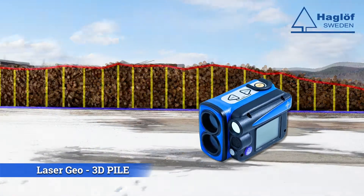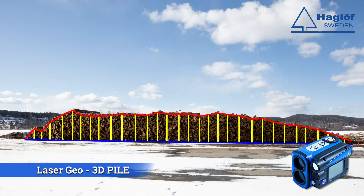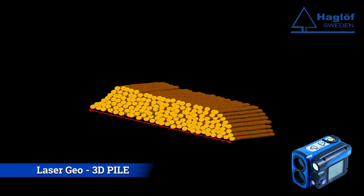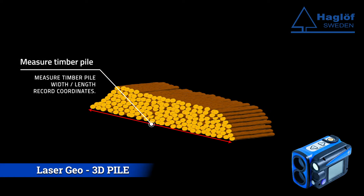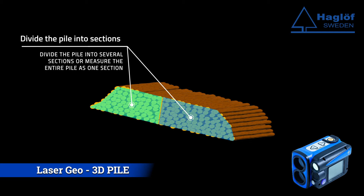How to measure a timber pile using the Laser Geo with the 3D pile firmware application. First, the length of the timber pile is measured — two different methods can be used. It is also possible to register the geographical coordinates of the pile. If it consists of different assortments or tree species, the pile can be divided into several sections.